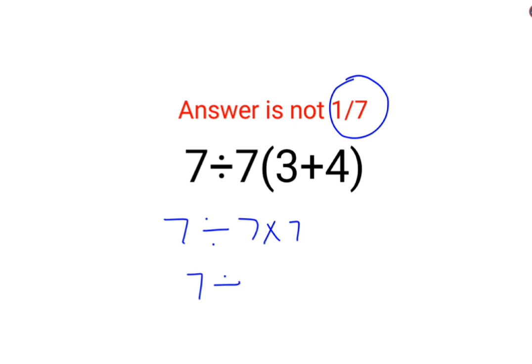So a lot of people think this is 7 divided by 7, 7 into 7 is 49. So the answer for this question is 1/7.